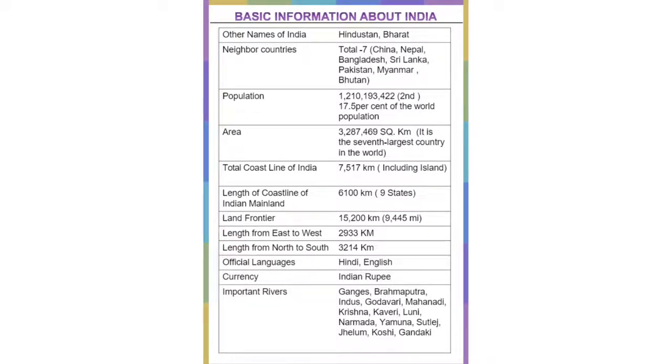The currency is the Indian rupee. The important rivers are Ganga, Brahmaputra, Indus, Godavari, Mahanadi, Kaveri, Luni, Yamuna, etc.